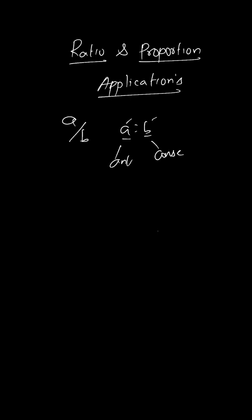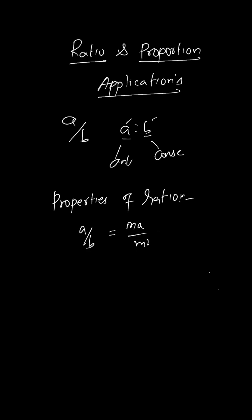Properties of ratio. If you have a ratio a by b, you can multiply both terms by the same number m — giving ma divided by mb, and the ratio remains the same. For example, 2 by 5: multiply both terms by 2 to get 4 by 10. So 2 by 5 is equal to 4 by 10. This is one property of ratio.